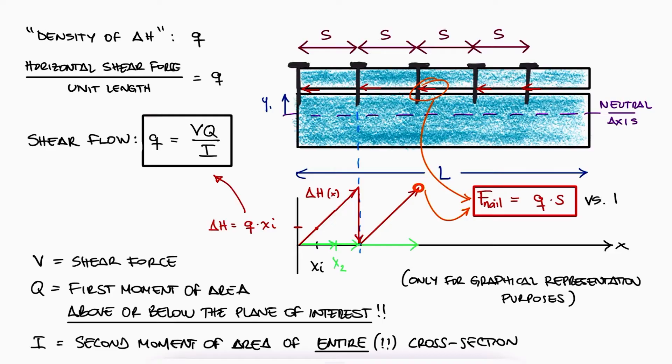Sometimes we have the maximum allowable shearing force information, like it is usually the case for nails, so we compare delta H to that maximum allowable value, and sometimes we have the maximum allowable shearing stress, like in the case of the bolts.